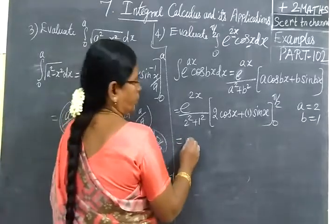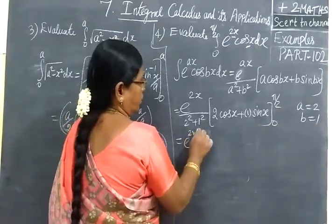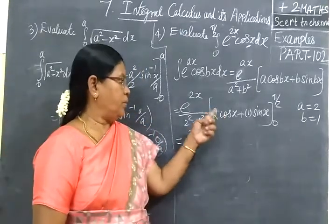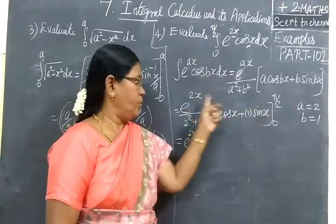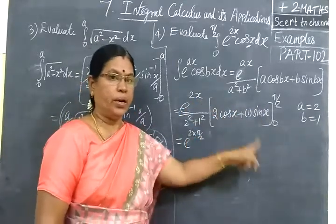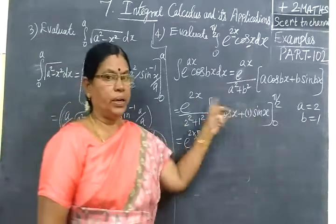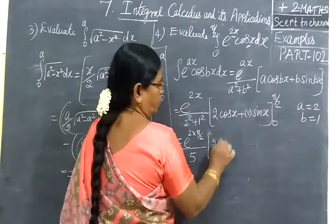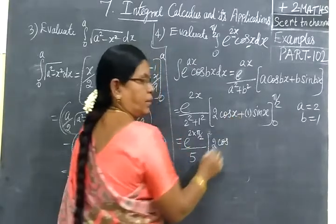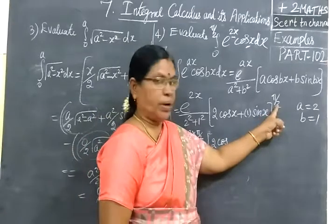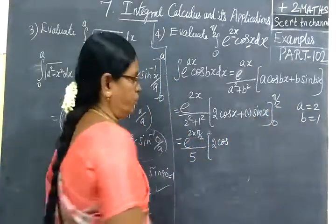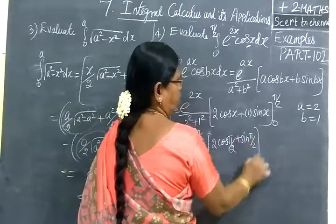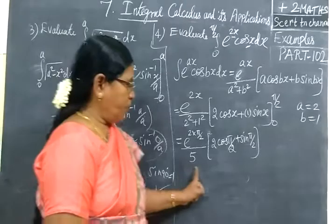Now apply the limit. e^(2x)/5. When you apply the limit, upper limit. Now I am writing upper limit. In that, π/2, 5. Upper limit. Upper limit is π/2. So 2 cos π/2 plus sin π/2. Now upper limit part over.